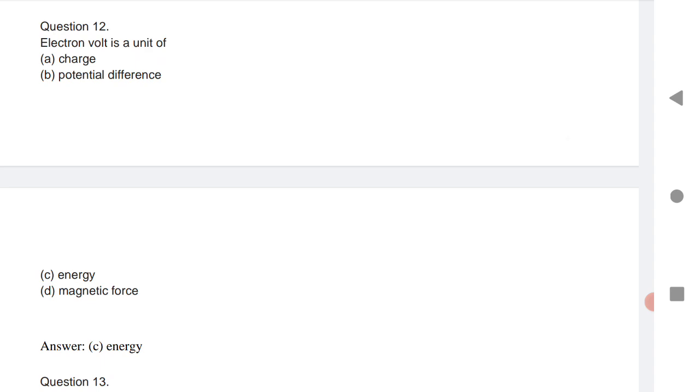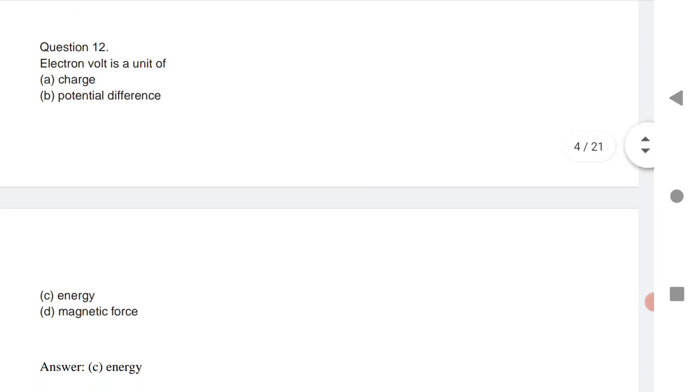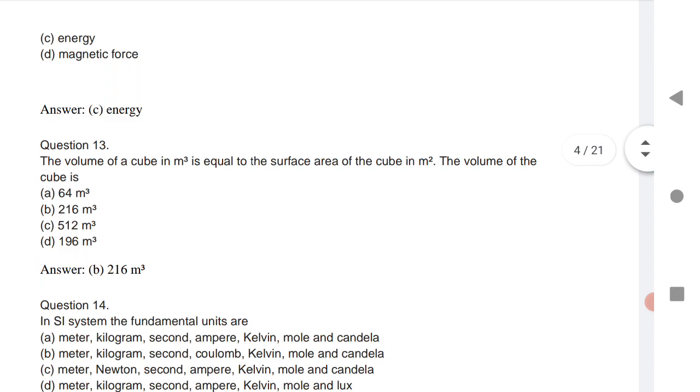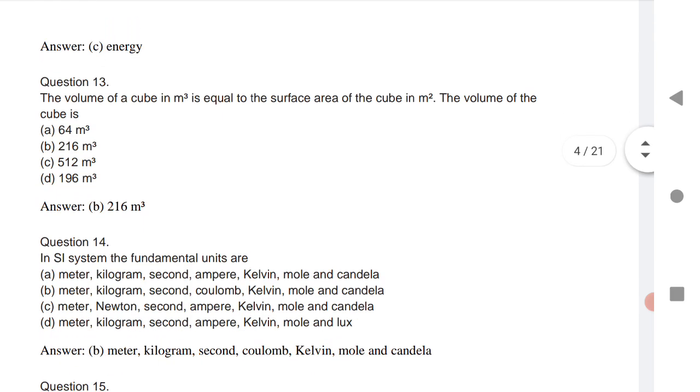12th question is electron volt is a unit of energy. Next very important question. The volume of cube in M cube is equal to surface area of M square. The volume of cube is 216 meter cube. You know the formula, substitute it you will get it.